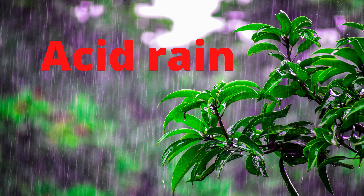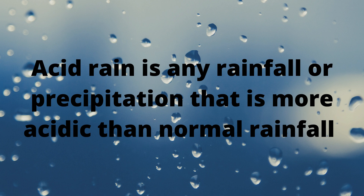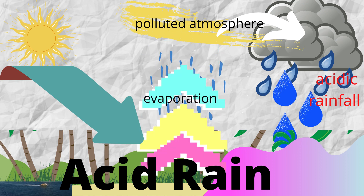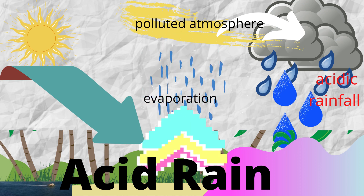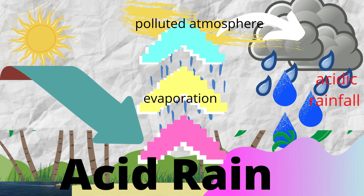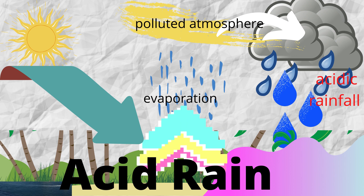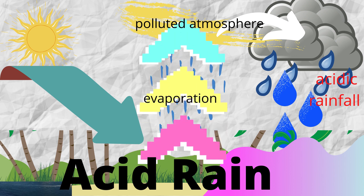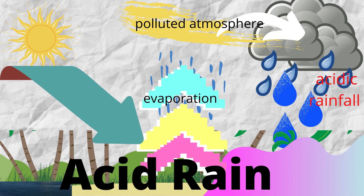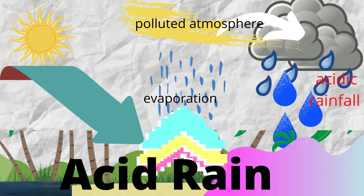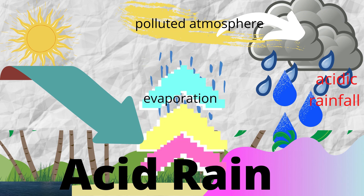Another problem that we experience is acid rain. Acid rain is any rainfall or precipitation that is more acidic than normal rainfall. Normal rainfall has some amount of acid; however, acid rain is far more acidic than normal rainfall. The acid in normal rainfall measures about 5 to 5.5 on the pH scale, while acidic rainfall measures about 4 on the pH scale. The lower the pH, the more acidic it is.